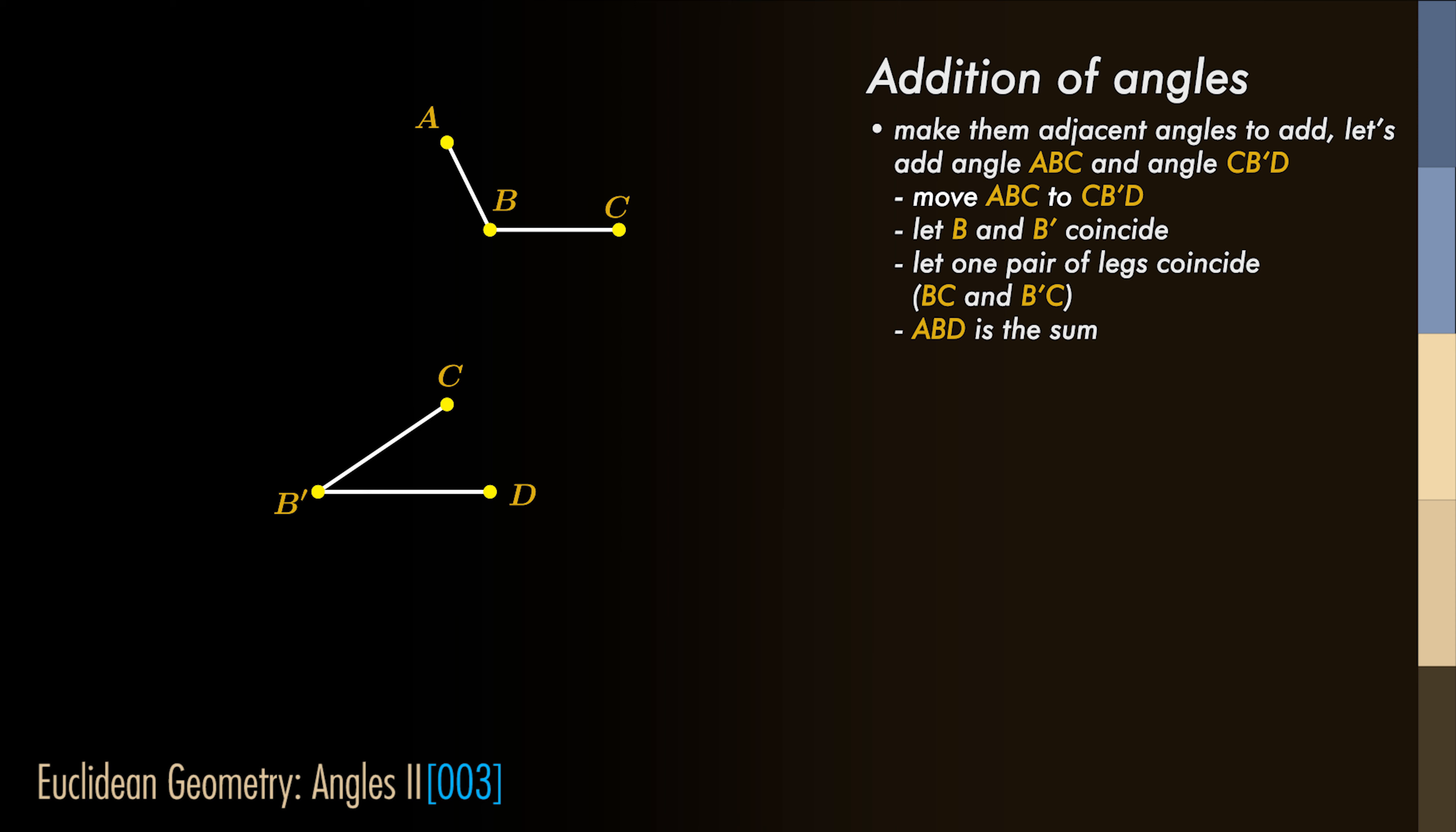By moving CB'D and having B' coincide with B, and make also one of the legs coincide, we get an angle ABD that's the sum of the two.